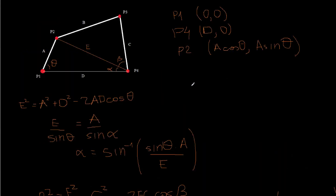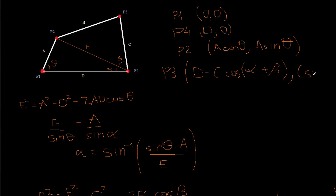So the point P3 has the x coordinate equal to D minus C cosine of (alpha plus beta), and the y coordinate is C times sine of (alpha plus beta). So that's it — we have all the information we need to write the script.